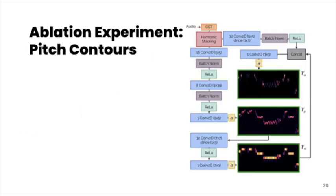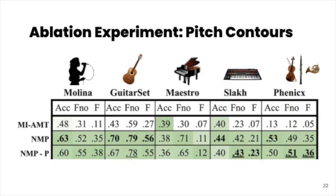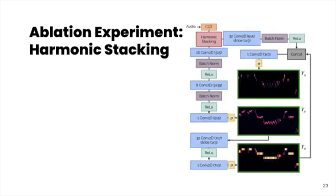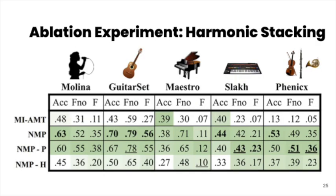We perform a first ablation study to examine the effect of the supervised bottleneck layer YP on the note event metrics by removing the supervision on this layer. We see that removing the supervision on YP results in a small but significant drop in the note event metrics. We perform a second ablation experiment examining the effect of the harmonic stacking layer by removing it, in turn reducing the receptive field of the model. We see that this results in a significant drop in metrics, validating that harmonic stacking is an effective way to reduce model capacity while maintaining performance.